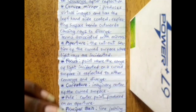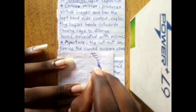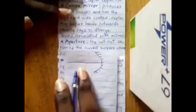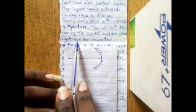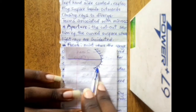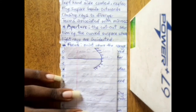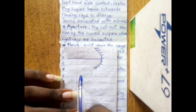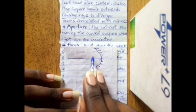Now we'll look at terms associated with mirrors. The first term is aperture — the cut-out section of the curved surface where light rays are incident. The mirror can be larger, but the part we are concerned with is the aperture. The distance across this cut-out section gives us the aperture of the mirror.